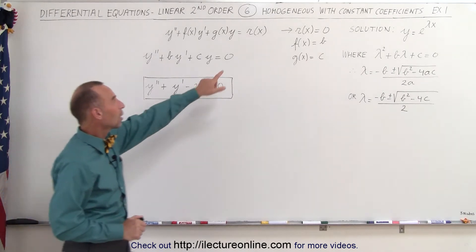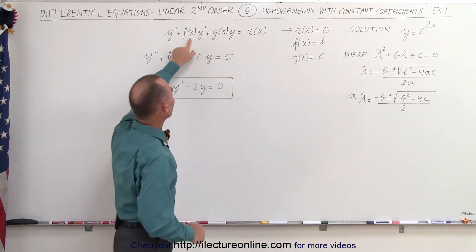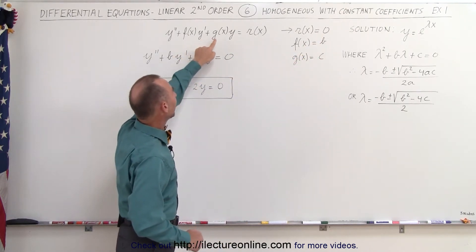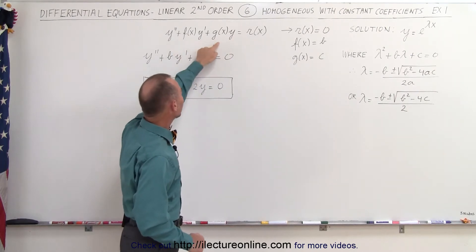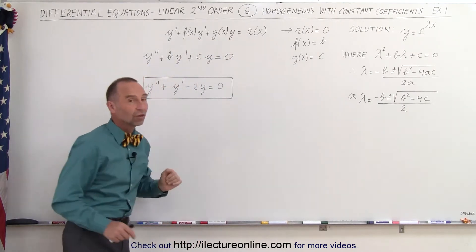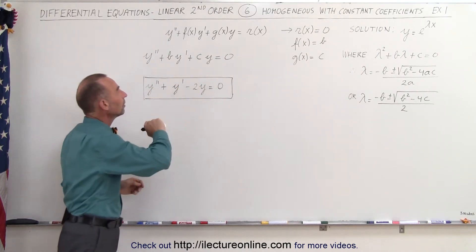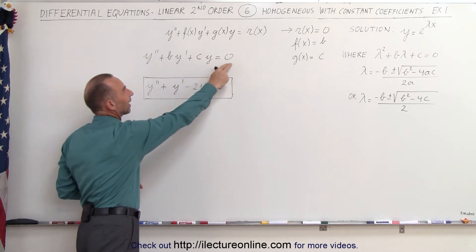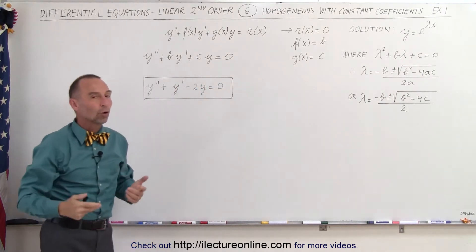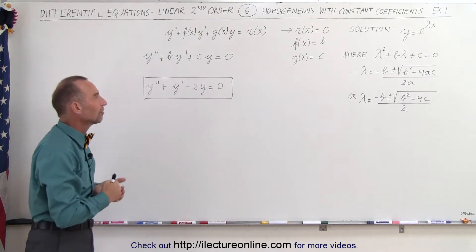Now, if we allow r of x to equal zero, and then replace the function of x in front of y prime and the function of x in front of y with constants, the equation now looks like this. So it's still a linear second-order differential equation, but the coefficients are now constants, and on the right side we have zero, therefore it's also homogeneous. And so for that we have a special technique to solve these types of differential equations.